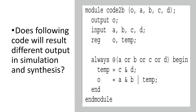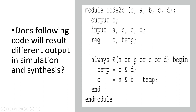The first question is on your screen — does the following code result in different output in simulation and synthesis? In this code there are four input variables a, b, c, and d, and one output variable o. The intention is to perform an AND operation on inputs a and b, in parallel AND on c and d, then OR both results. In the always block, the sensitivity list includes all variables a, b, c, and d. Then temp = c & d, and o = (a & b) | temp. You can pause the video here and let me know if simulation and synthesis will show the same results.